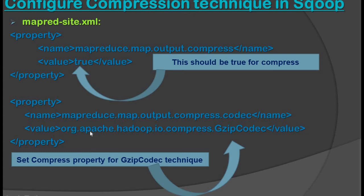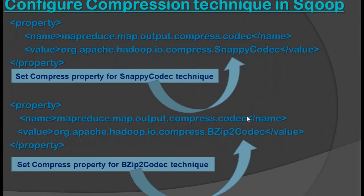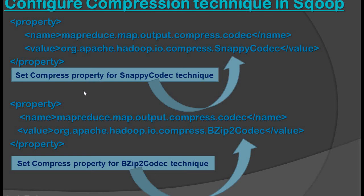We need to check that mapreduce.map.output.compress is set to true, and mapreduce.map.output.compress.codec is set to org.apache.hadoop.io.compress.GzipCodec. We can also set the snappy codec using the snappy codec configuration, and set the bzip2 codec using the bzip2 codec configuration. By this way we can configure each compression codec technique in the Hadoop settings.